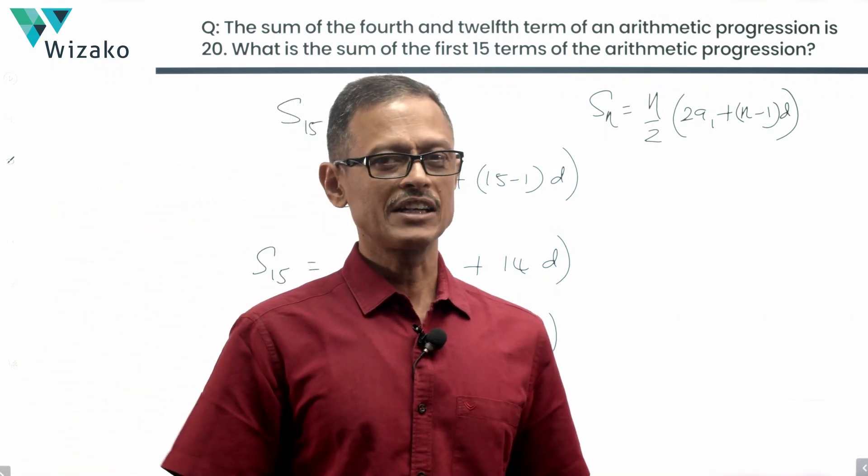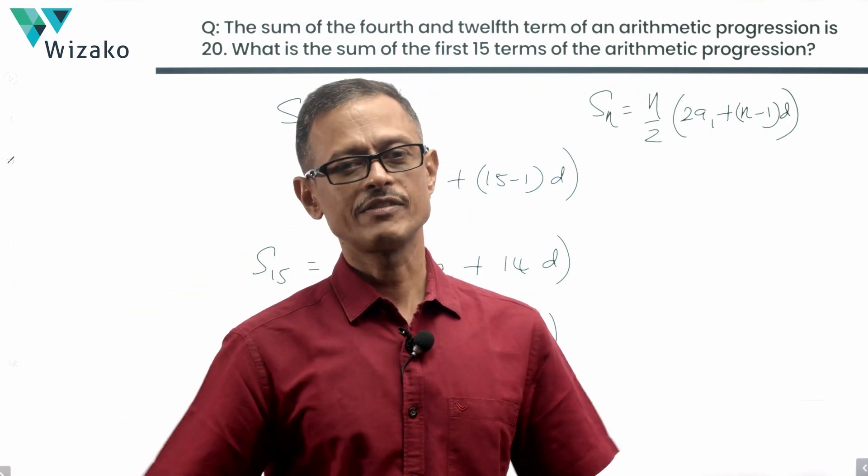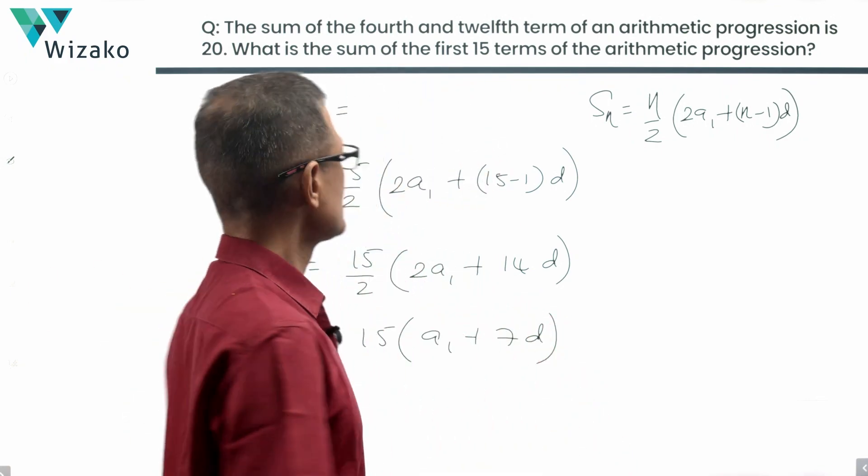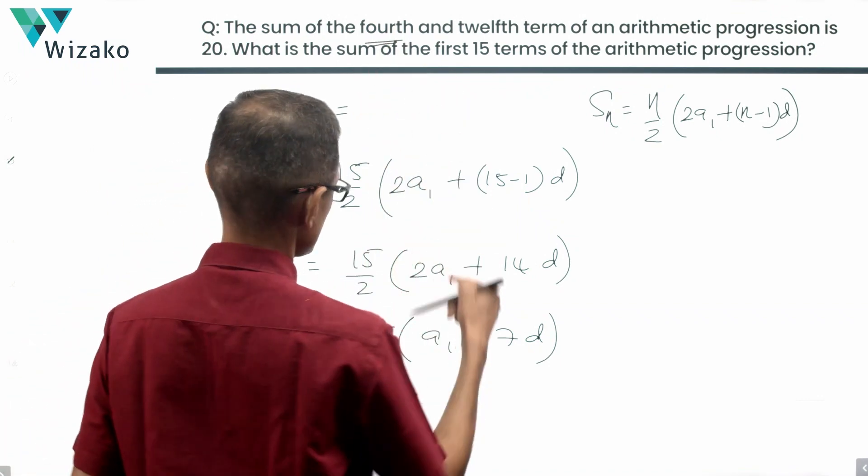So if you can find out A1 plus 7D, we know A1, we know D, therefore we can find out A1 plus 7D. We have the answer to this question. Let's see if this is going to help us to get to this.